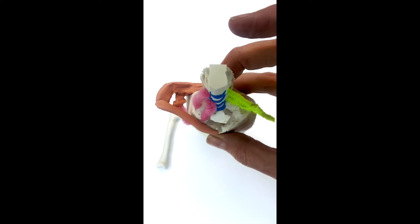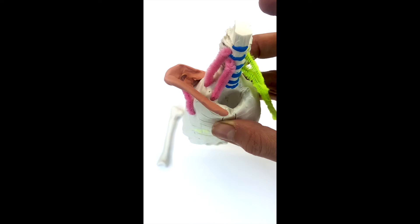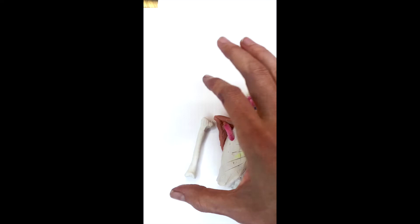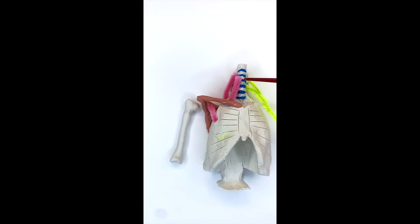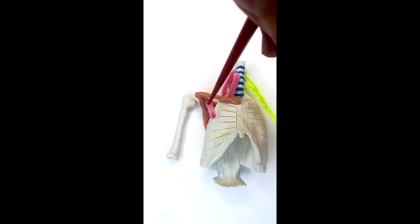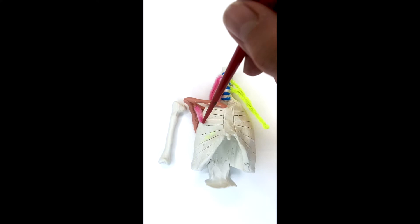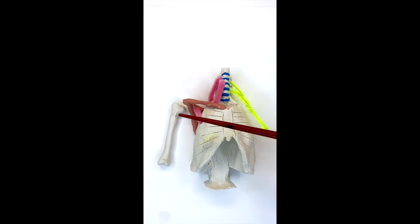Now the pink pipe cleaners represent two muscle structures. So you have the scalene muscles, which are coming from the cervical spine to the top of the rib cage.